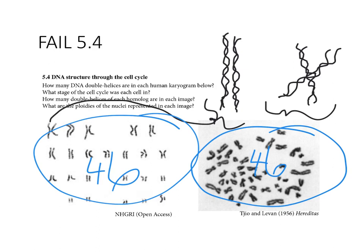After those two sister chromatids segregate into the two daughter cells, we call those two double helices chromosomes. It's all terminology — there's no biology behind this. It's all double helices. But to be effective communicators of genetics, we must know the difference: a sister chromatid is a double helix at metaphase, while a chromosome is a double helix at any other time during the cell cycle.